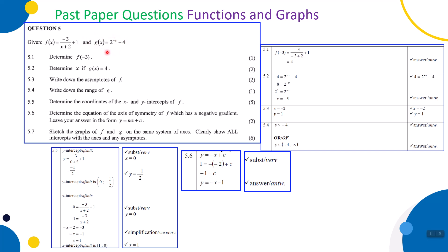g(x) is an exponential function and f(x) is a hyperbolic function. For 5.1, one mark, we need to determine f(-3). This means we substitute -3 in place of x in f. So f(-3) = -3 over (-3 + 2) + 1. On your calculator you'll find an answer of 4. You get one mark for the answer of 4.